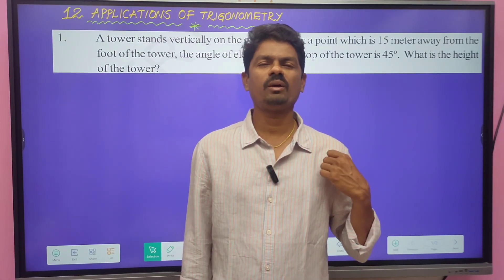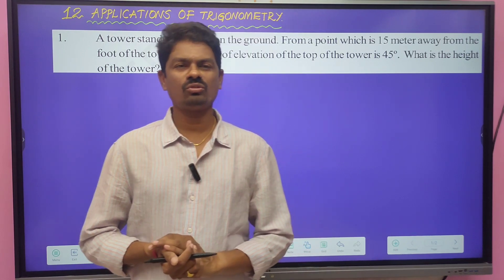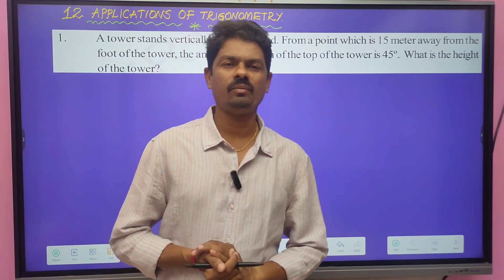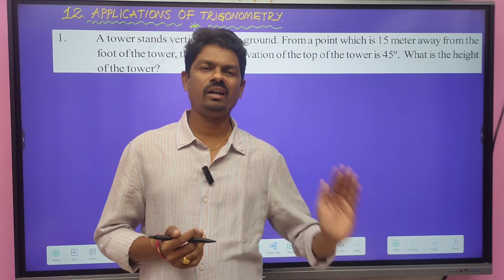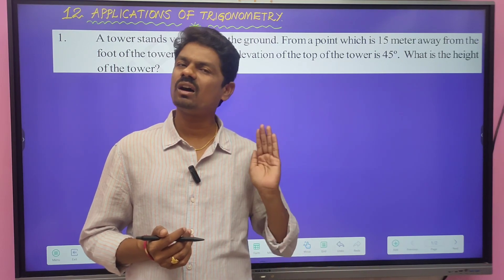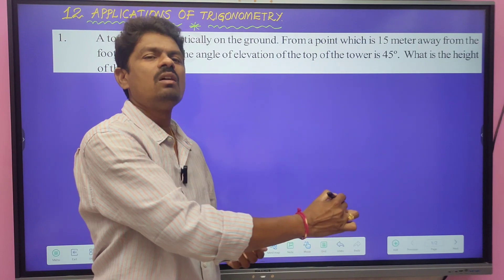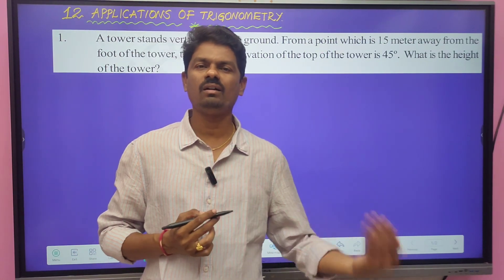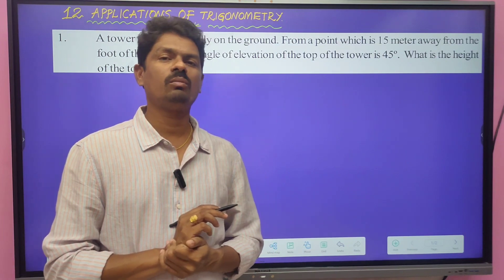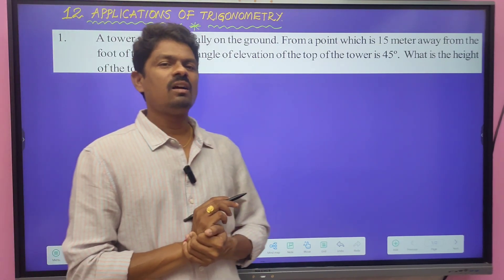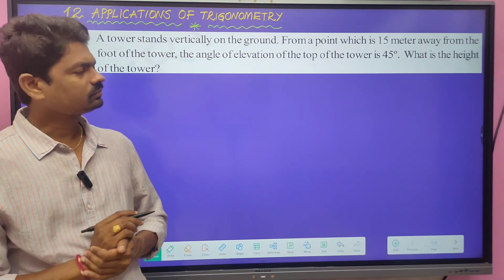Good morning children, today we are going to solve problems from exercise 12.1. Before solving the problems in Chapter 12, you have to remember: the height of a building, tower, mountain, or tree — we have to consider it as a straight line. Whether it is a tree, building, or tower, for mathematical convenience we draw only a straight line.